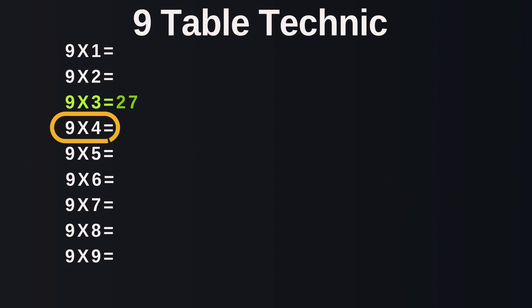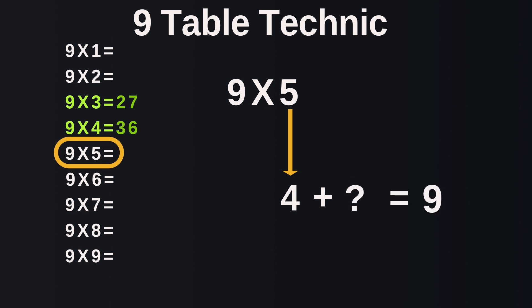Now let's try 9 times 4. One number directly behind 4 is 3, and what number when added with 3 will give us 9? 6. So our answer to 9 times 4 will be 36. Now let's give 9 times 5 a go. One digit right behind 5 is 4, and the number that will give us 9 when added to 4 is 5. So our answer to 9 times 5 is 45.